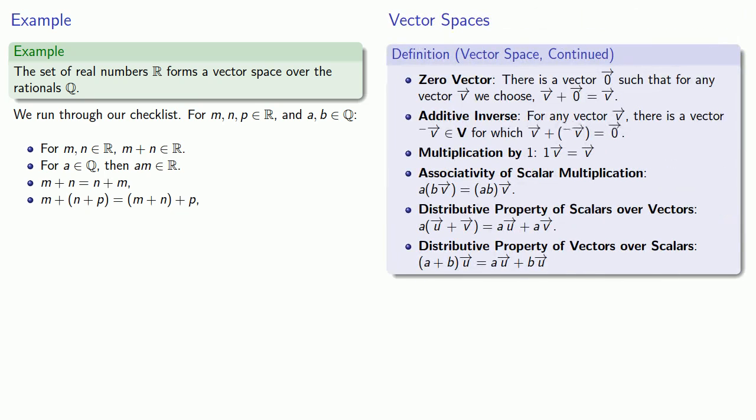So we need to confirm that there is actually a zero vector. That there's some real number which if we add it to any other real number gives us what we started with. And the number zero works perfectly well as that zero plus M is always going to be equal to M. As with the field itself, it's not enough that zero exists. Zero has to be one of the elements of our set. And since zero is a real number we do have a zero vector.